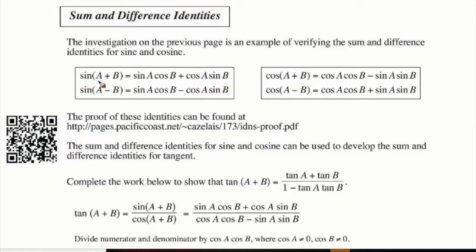The sine of two angles added together — the sine of that sum — is equal to the sine of the first angle times the cosine of the second angle, plus cosine of the first angle times sine of the second angle. You can see the patterns here for addition and subtraction of angles for sine, and there are also identities for cosine as well. The sum and difference identities for sine and cosine can be used to develop sum and difference identities for tangent.